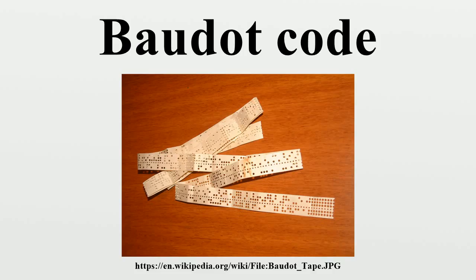There was no concern about arranging the code to minimize operator fatigue, and instead Murray designed the code to minimize wear on the machinery, assigning the code combinations with the fewest punched holes to the most frequently used characters. The Murray code also introduced what became known as format effectors, or control characters, the CR and LF codes. A few of Baudot's codes moved to the positions where they have stayed ever since — the NULL or BLANK and the DEL code. NULL-BLANK was used as an idle code for when no messages were being sent.